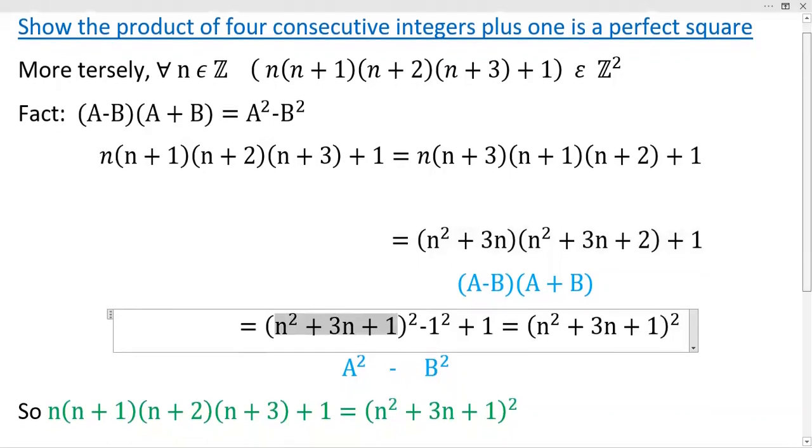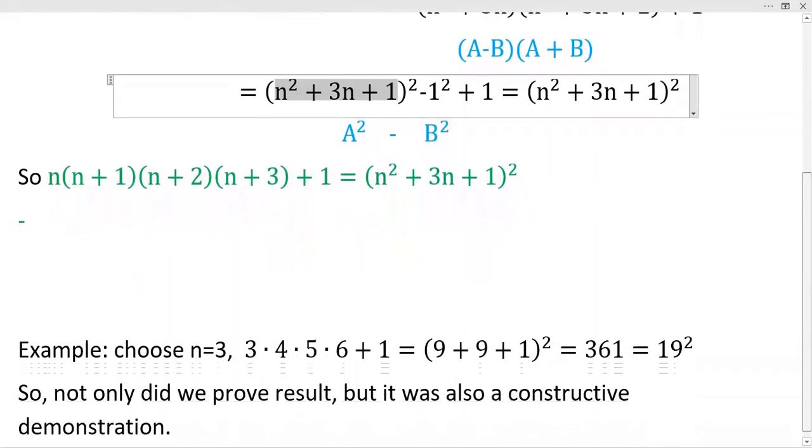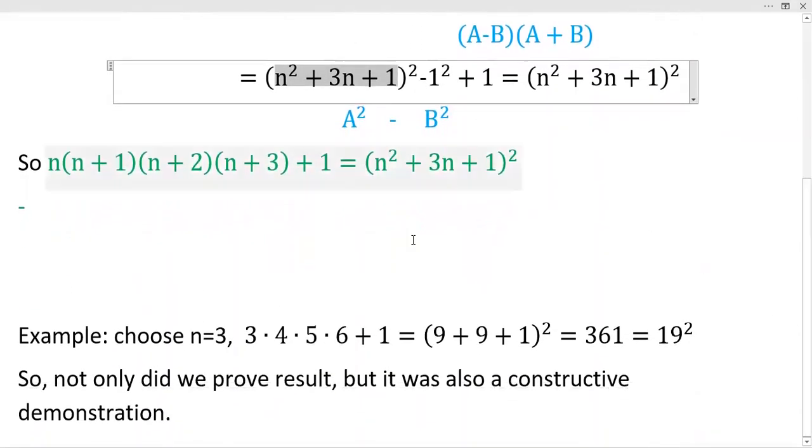Now, I've summarized it down here for you. This is what we've discovered. And not only is this a proof, it also gives a construction on how to find the solution. Let's use a concrete example here. If you choose n equals three right here, when you multiply this out, you actually get 361. But if you substitute n equals three for n²+3n+1, you actually get 9+9+1, that's 19. So 361 is equal to 19 squared.